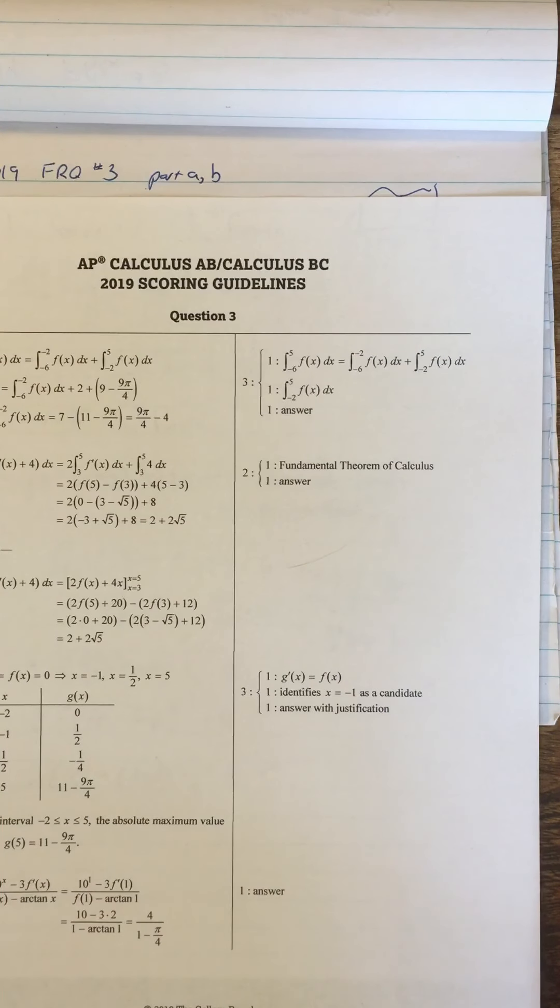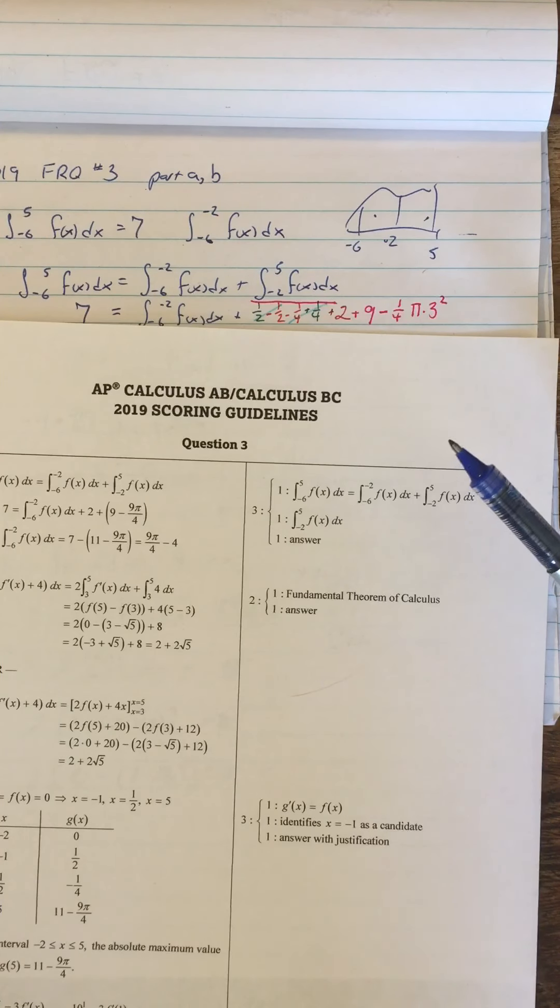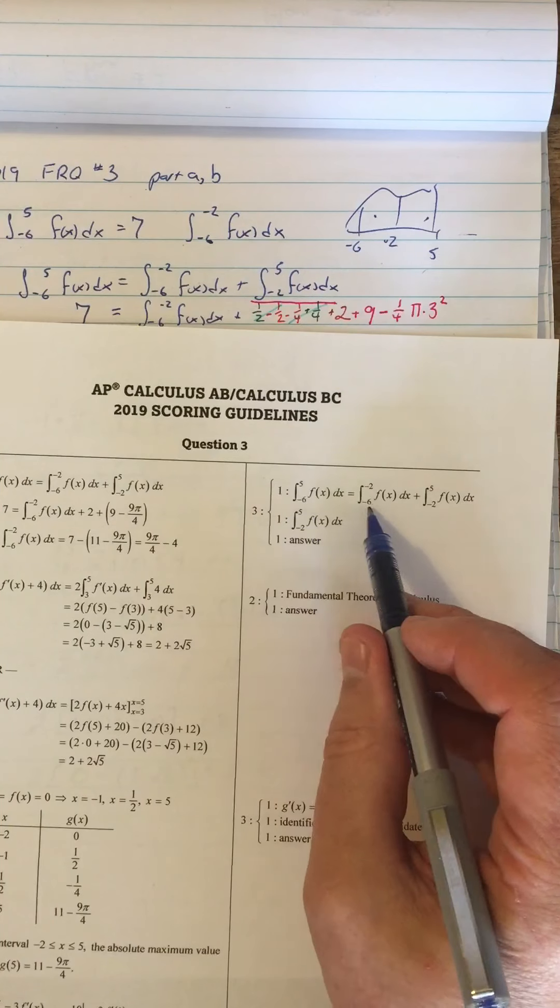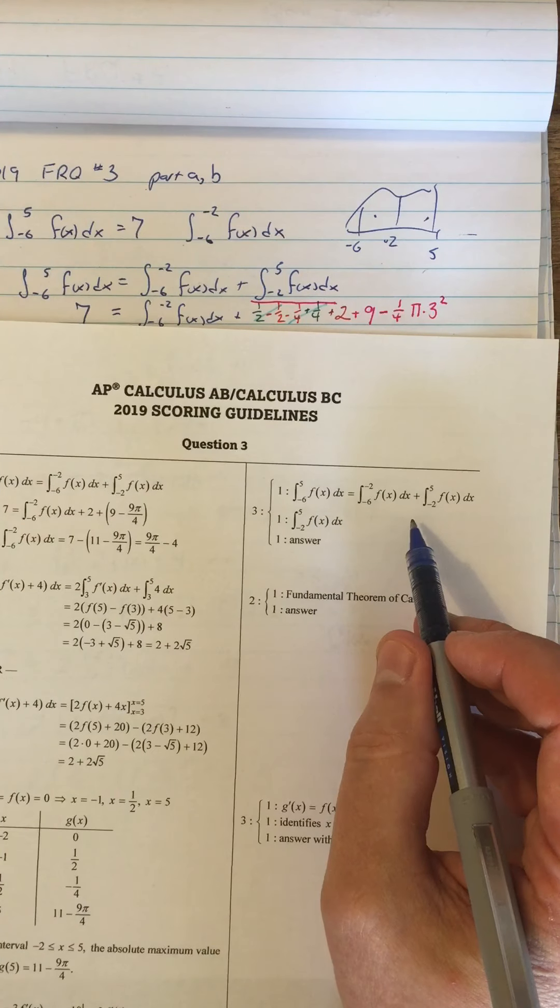So now let's just take a careful look at the scoring on question number three. So here's for part A. We get one point just for breaking the integral up into the two parts. But you need to write that down to get that point.